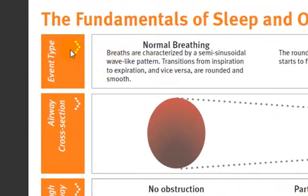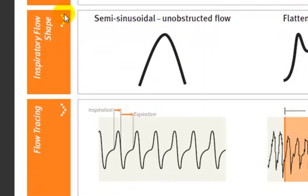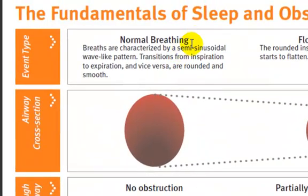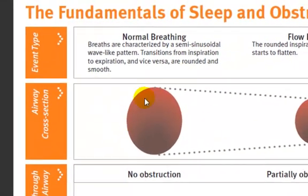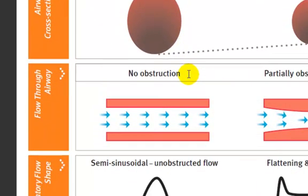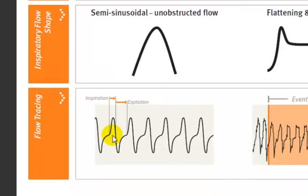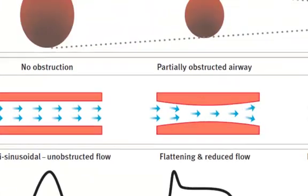On this screen image you can see there's event types, airway cross section, flow through airway, inspiratory flow shape, and flow tracing. If you look down in a column format, normal breathing is characterized by the largest opening in the airway cross section. There is no obstruction and a clear flow of air through the upper airway. A typical waveform is semi-sinusoidal and unobstructed flow. This particular graph shows you the inspiratory and expiratory phases of breathing, associated with both air flow and respiratory effort.